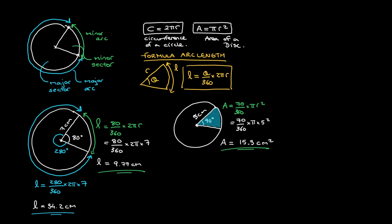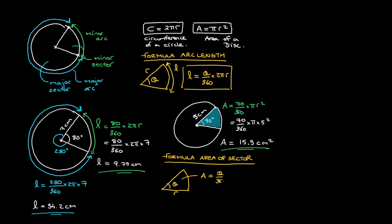We can generalize this method to get a formula for the area of a sector. For a sector with radius r and angle theta, the area A is: A = θ/360 × πr². Here, θ/360 corresponds to figuring out what fraction of the disk we're dealing with, and we multiply that by the area of the disk, πr².